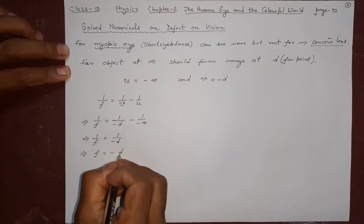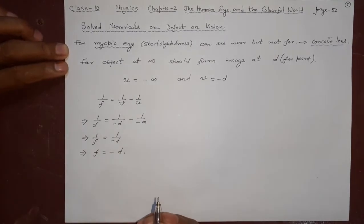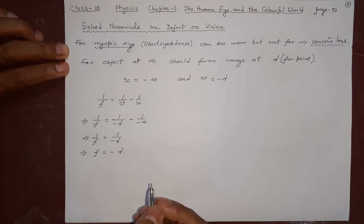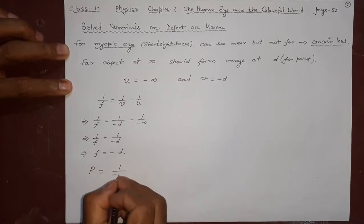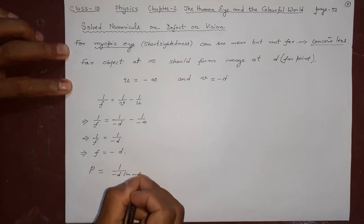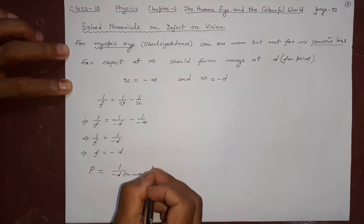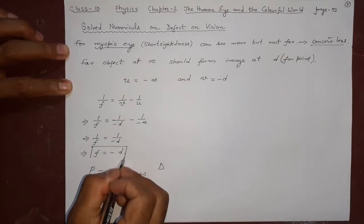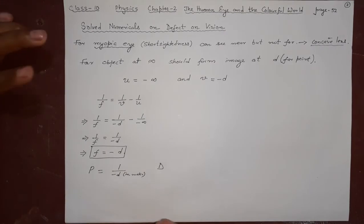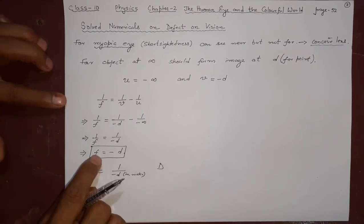So f = -d. That means what you need is a corrective lens with focal length equal to the distance of the far point from the eye. The power will be P = 1/(-d) in meters. The unit will be diopter. This is the important formula we are going to use in numericals. Remember this for myopic eye.